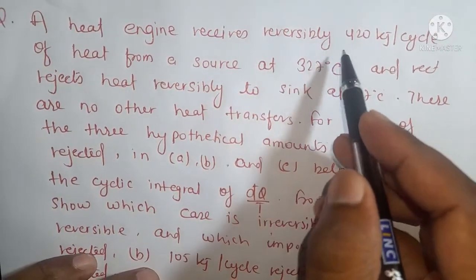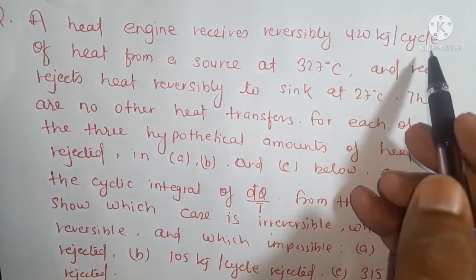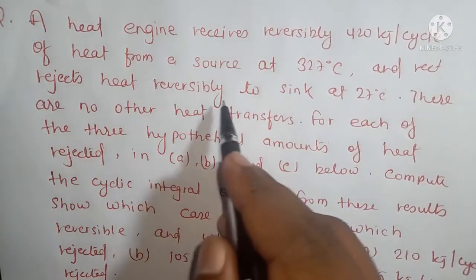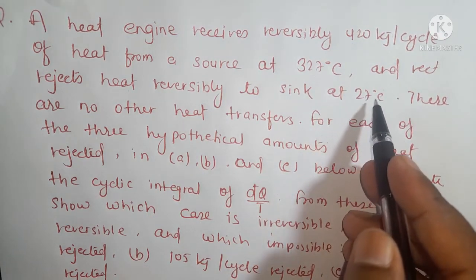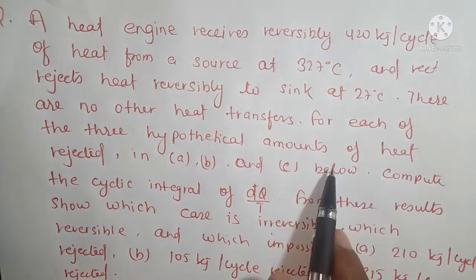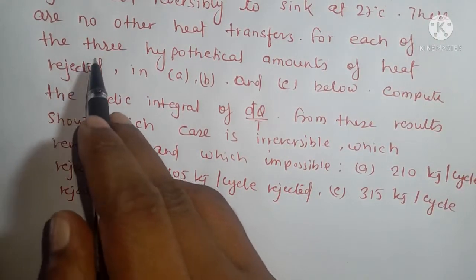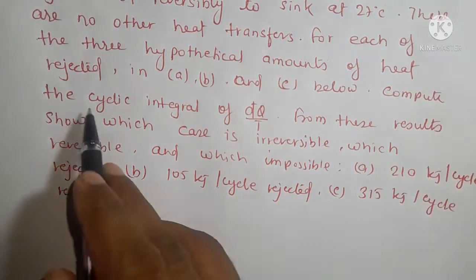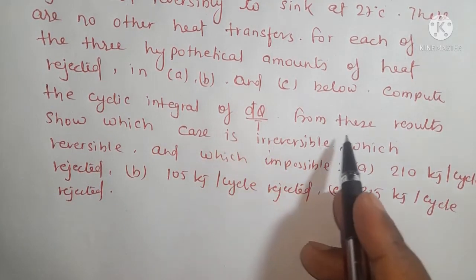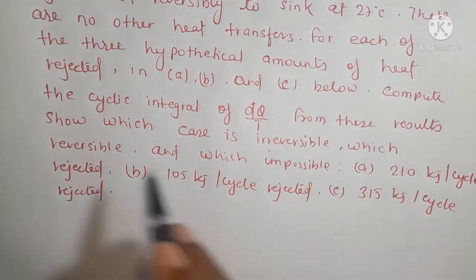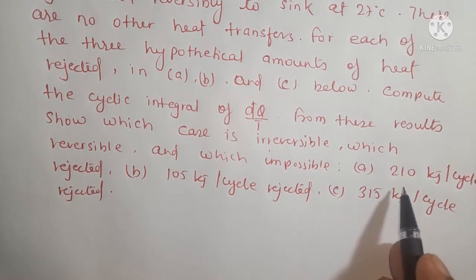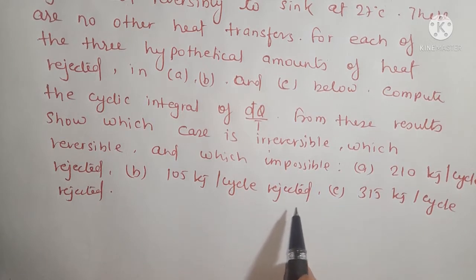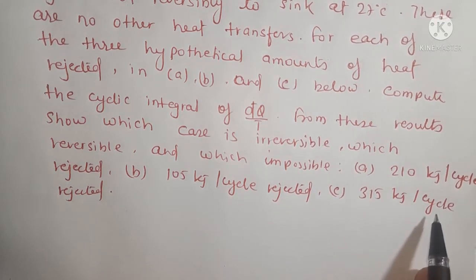A heat engine receives reversibly 420 kJ per cycle of heat from a source at 327 degrees Celsius and rejects heat reversibly to a sink at 27 degrees Celsius. There are no other heat transfers. For each of the three hypothetical amounts of heat rejected in A, B, and C below, compute the cyclic integral of dQ/T. From this result, determine which case is irreversible, which is reversible, and which is impossible. A: 210 kJ/cycle rejected; B: 105 kJ/cycle rejected; C: 315 kJ/cycle rejected.